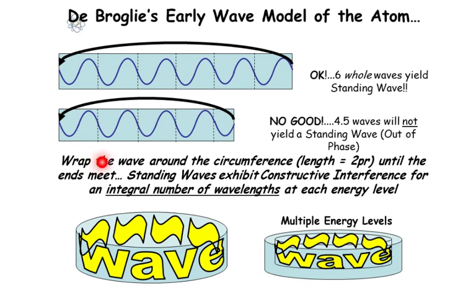So wrap the wave around the circumference, which is 2πr, until the ends meet. The standing wave exhibits constructive interference for an integral number of wavelengths at each energy level.